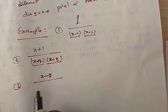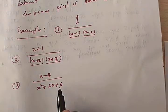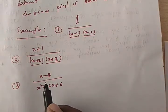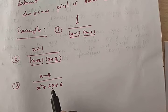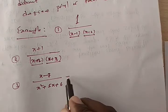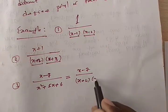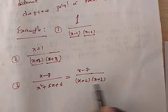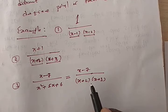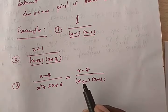Yes — x²+5x+6 = (x+2)(x+3). Clearly these two are distinct, so the denominator is a product of distinct linear factors. Therefore this fraction is also a Type 1 problem. Another example: 1 / [(1−x)(1−2x)(1−3x)]. Here 1 is a polynomial of degree 0, and the denominator contains three distinct first-degree polynomials. So this fraction belongs to Type 1 as well.